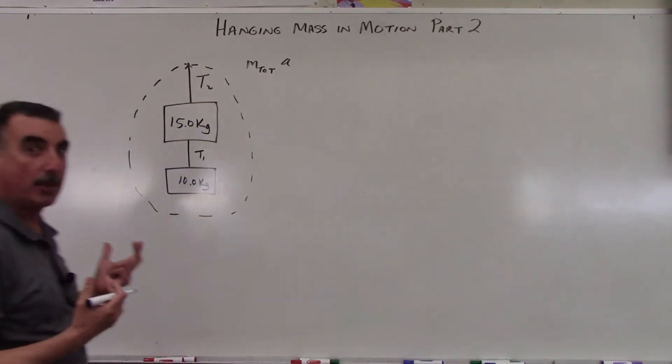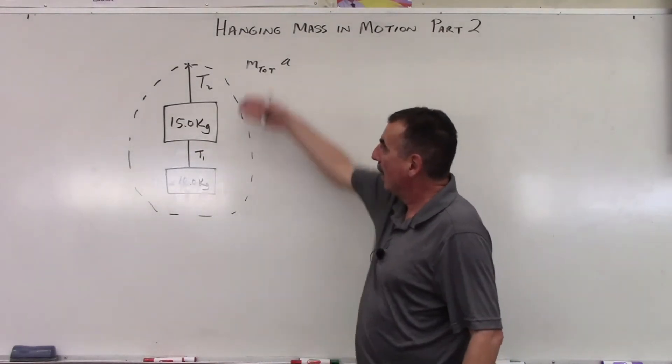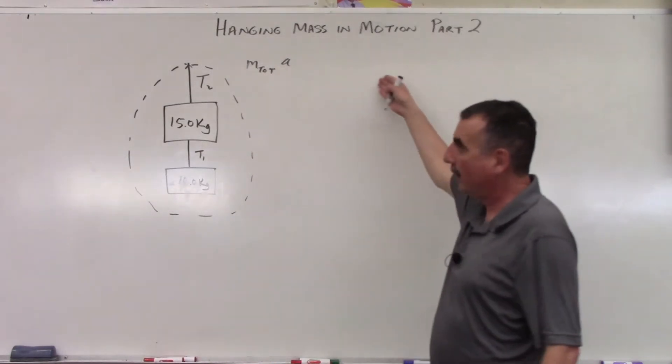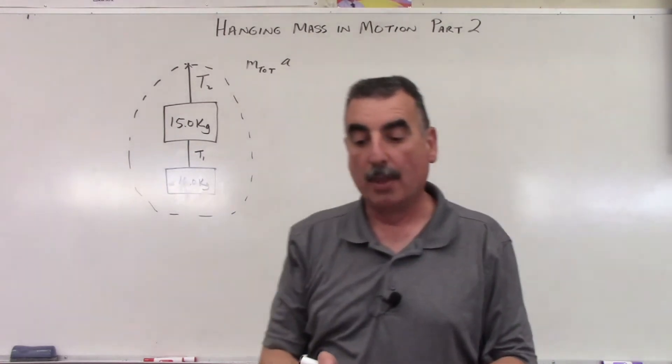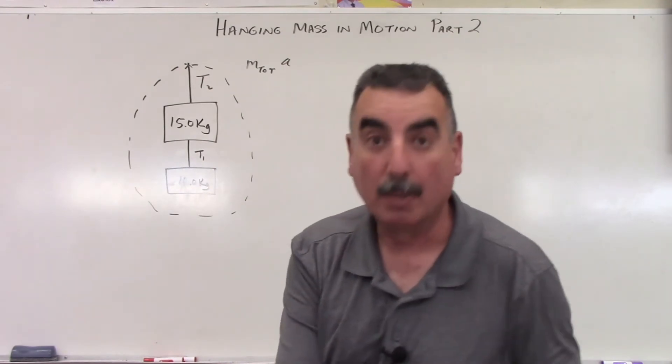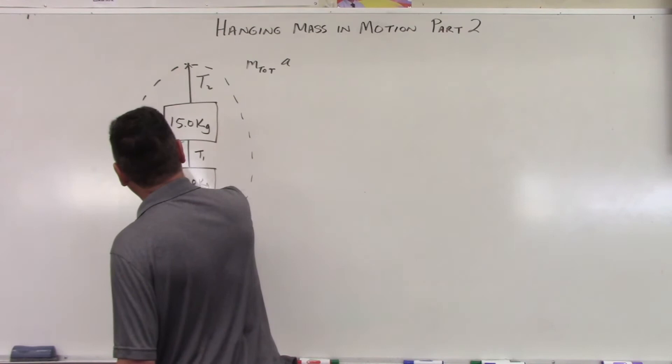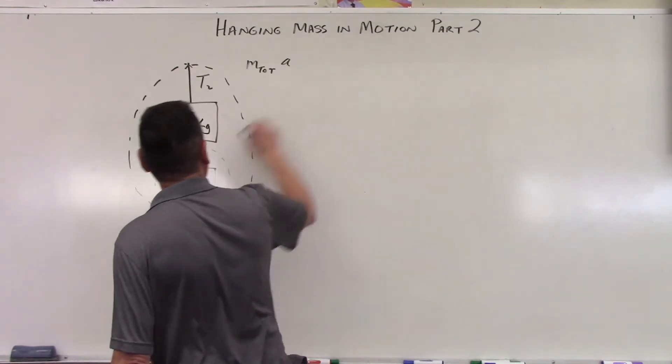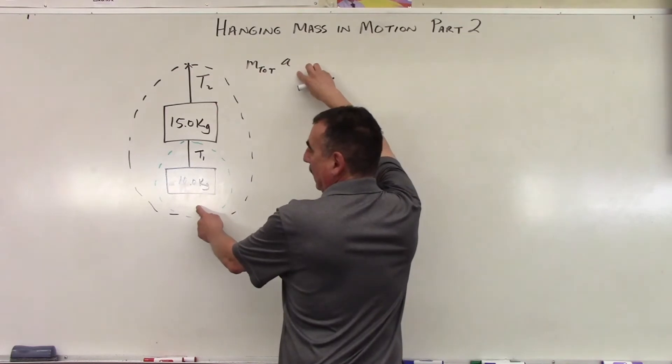The tension is still upward for both. So this whole system is moving downward. So the total mass of this system times the acceleration is the net force for this system. Now here's the trick. You're going to wonder, how do I get tension one? Because it's in between here. If I do the sum, I'm going to have two tensions. Let's take a look at this.